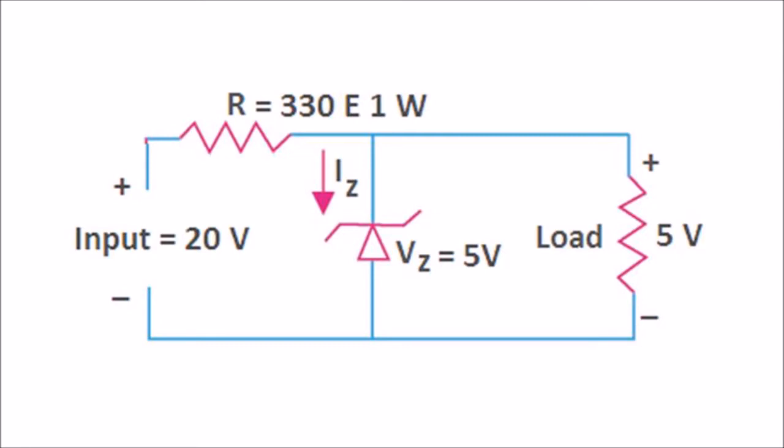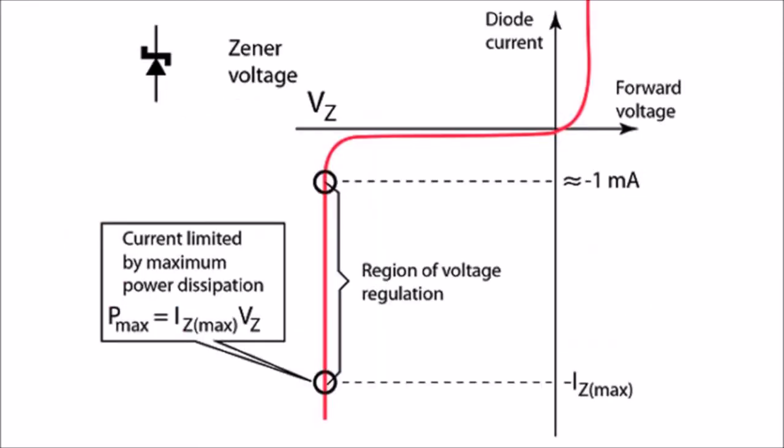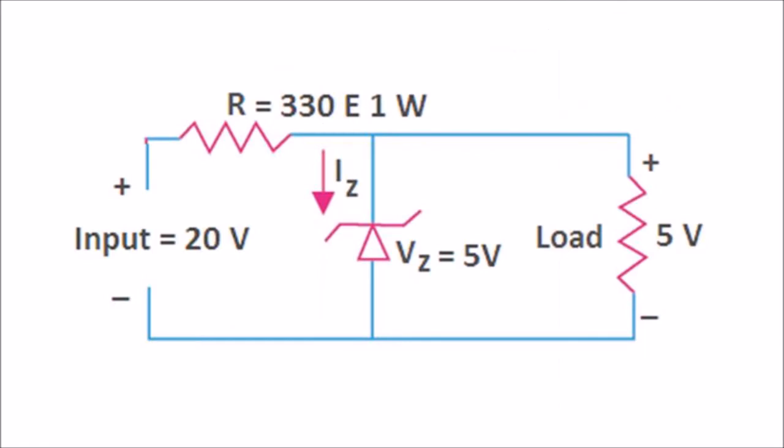We connect a Zener diode in the reverse bias condition. When the voltage across the diode exceeds the Zener breakdown voltage, a significant amount of current starts flowing through the diode. As the load is in parallel to the diode, the voltage drop across the load is also equal to the Zener breakdown voltage.